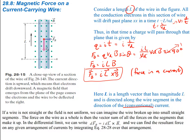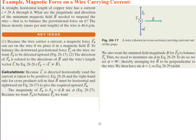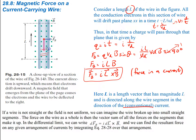If a wire is not straight or the field is not uniform, we can imagine the wire broken up into small, straight segments. The force on the wire as a whole is then the vector sum of all the forces on these little tiny segments. You just say that the differential of force equals I times the differential of length, cross B, and then integrate across that.